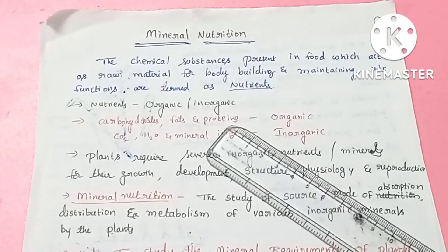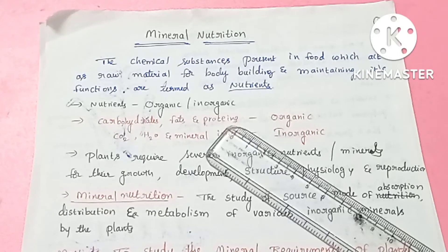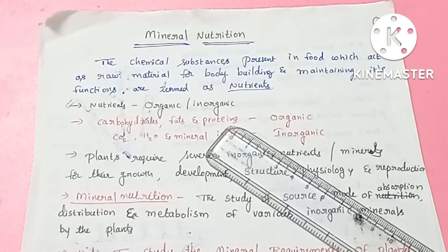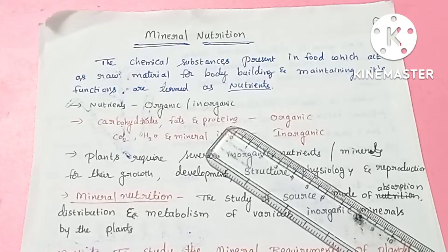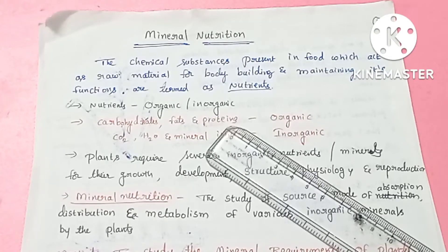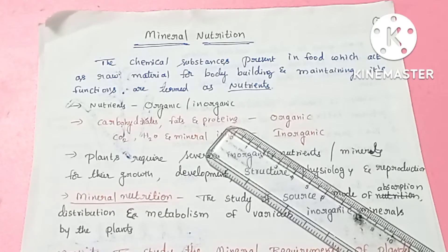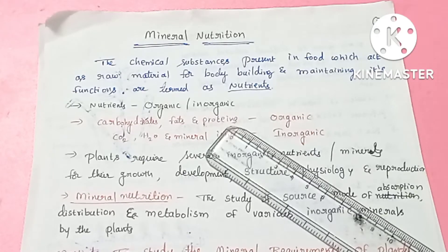First, a nutrient is a chemical substance. We will talk about it as a raw material. In the plant, we will talk about different metabolic activities and functions. The chemical substance found in food — in plants, in human beings, in animals — all living organisms have nutrients. Nutrient is the chemical substance found in the food which acts as a raw material for building the body and also maintaining various functions of the body.